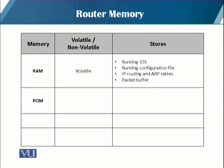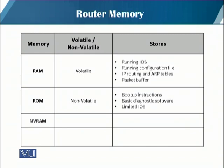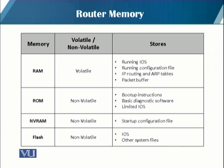The next type of memory is ROM. It's non-volatile and stores boot-up instructions, basic diagnostic software for power-on self-test, and a limited version of IOS as a backup — if the router is unable to load the full IOS, it loads this limited IOS from ROM. The third type is NVRAM, also non-volatile, which stores the startup configuration file. The fourth type is flash, also non-volatile, which stores the full IOS and other system files. When the router boots up, that IOS is loaded from flash into RAM.